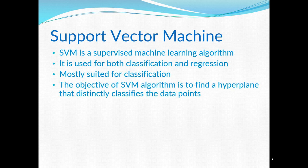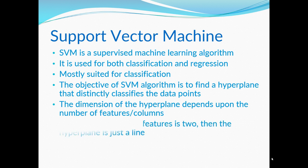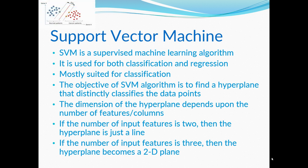The objective of the SVM algorithm is to find a hyperplane that distinctly classifies the data points. The dimension of the hyperplane depends on the number of features or columns. If the number of input features is 2, then the hyperplane is just a line. If the number of input features is 3, then the hyperplane becomes a 2D plane.